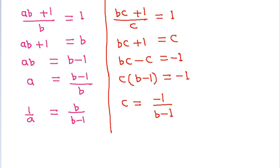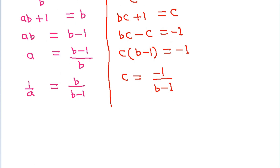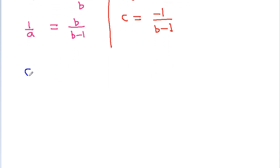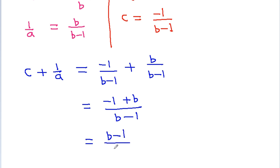Now we find the value of c plus 1 by a. Substituting c equals minus 1 by (b minus 1) and 1 by a equals b by (b minus 1), we get: minus 1 by (b minus 1) plus b by (b minus 1), which equals (b minus 1) by (b minus 1), and that will be equal to 1.